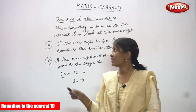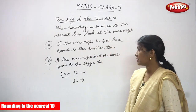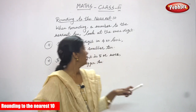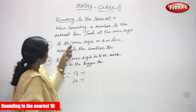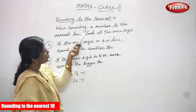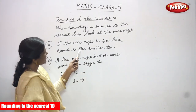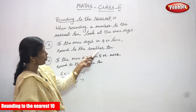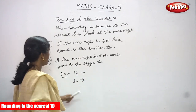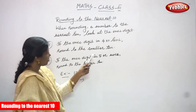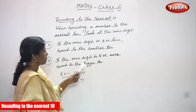Now we are going to see rounding to the nearest 10. When rounding a number to the nearest 10, look at the ones digit first. If the ones digit is 4 or less, round to the smaller 10. If the ones digit is 5 or more, round to the bigger 10.